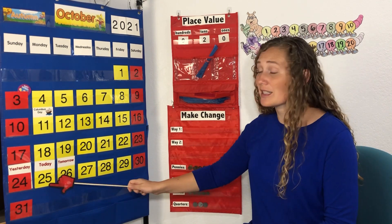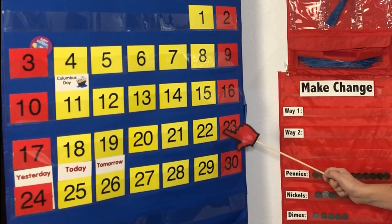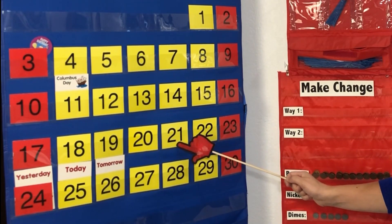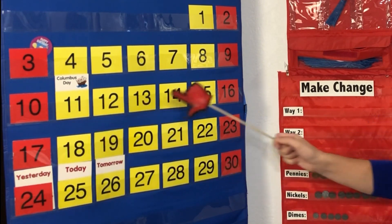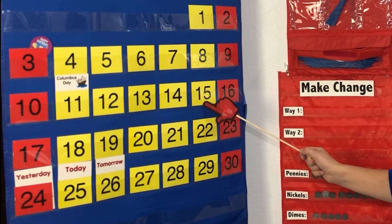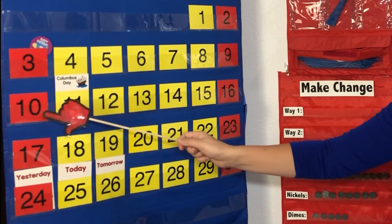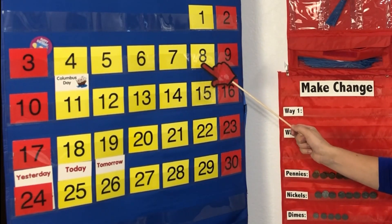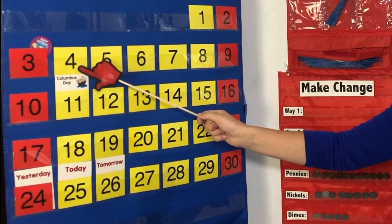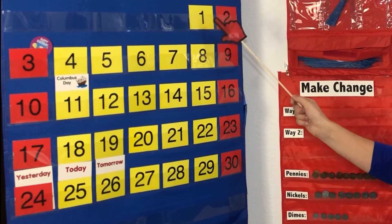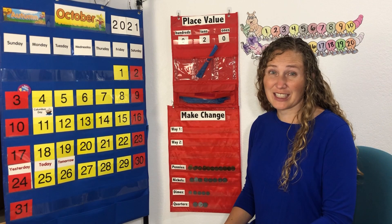Let's count down from 25 together: 25, 24, 23, 22, 21, 20, 19, 18, 17, 16, 15, 14, 13, 12, 11, 10, 9, 8, 7, 6, 5, 4, 3, 2, 1.